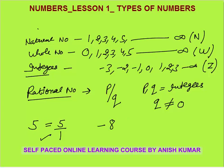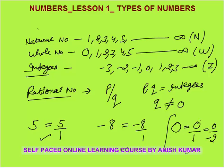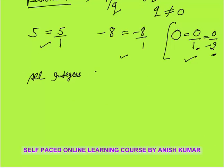Minus 8 is a rational number because minus 8 can be written as minus 8 by 1. What about 0? Is 0 a rational number? 0 is also a rational number because 0 can be written as 0 by 1, or even 0 by minus 2. By definition it is rational — P by Q where Q is not equal to 0. So 0 is also a rational number. In general, all integers are rational numbers.